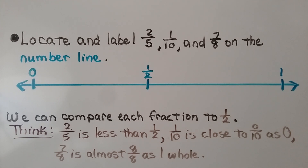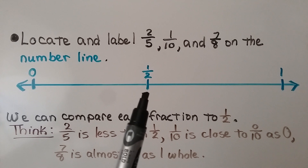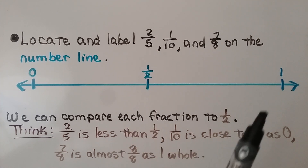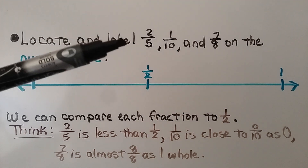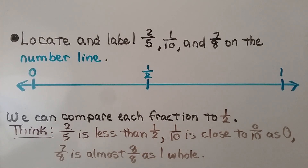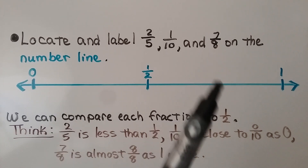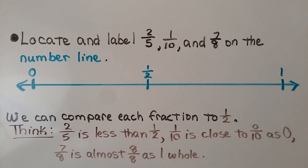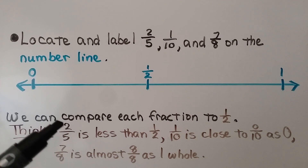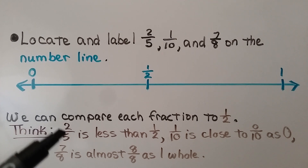Locate and label two-fifths, one-tenth, and seven-eighths on the number line. We have a number line and we mark 0, half for the halfway mark, and 1. We can compare each of these fractions to a half — put them on the left side if they're less than half, and on the right side if they're greater than half. Two-fifths is less than half because two is less than five.